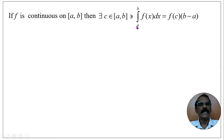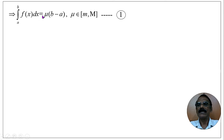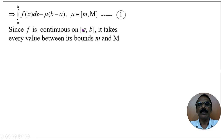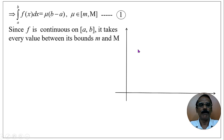The theorem states that the integral from a to b of f(x) dx equals f(c)(b−a). We now need to show that μ is nothing but f(c), where c belongs to the closed interval [a, b]. We call the expression integral from a to b of f(x) dx equals μ(b−a) as equation number 1. Our aim is to show that μ equals f(c). Since f is continuous on [a, b], it takes every value between its bounds, namely small m and capital M.